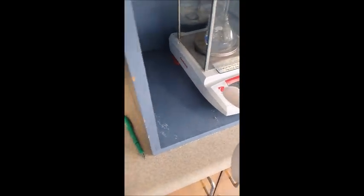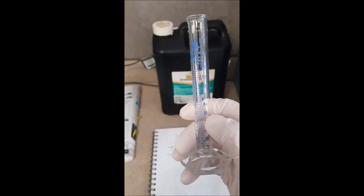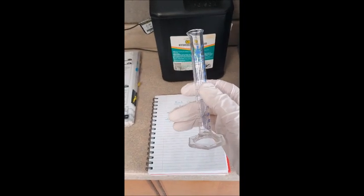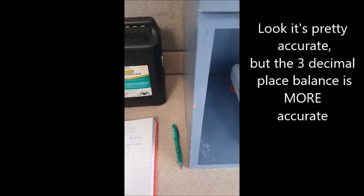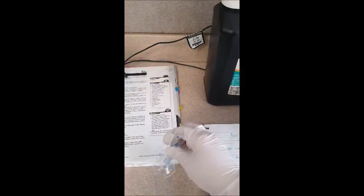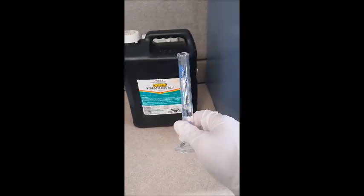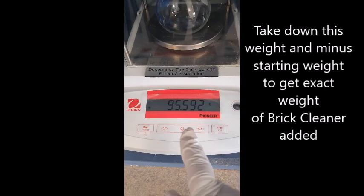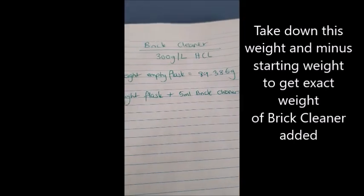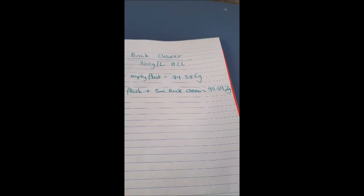Then I need to put about 5 ml of this into there. But we're going to use the weight to accurately determine how much it is because this is like B grade glassware so even though it says 5 ml it's not super accurate. It's plus or minus 0.2 ml. So we need to be more accurate than that. So we're going to use the weight to accurately weigh it. So the 5 ml is in there and our new weight is 95.592. So we've got the weight of the flask and then the weight of the flask plus the brick cleaner. So now you can figure out what is the weight of the actual liquid that we added.